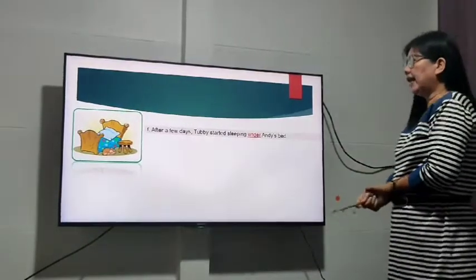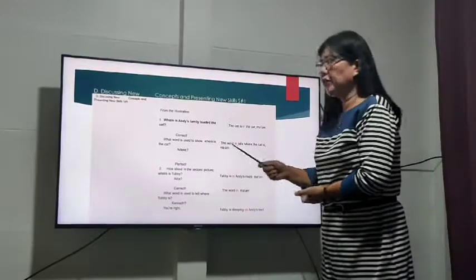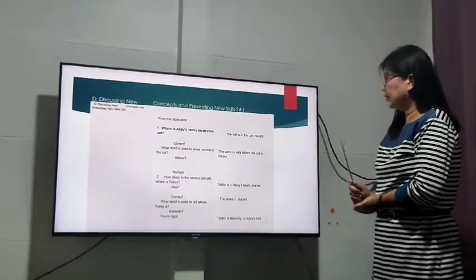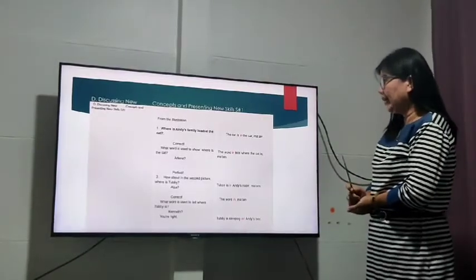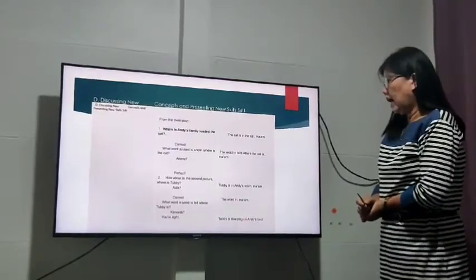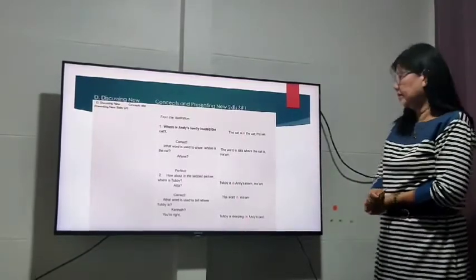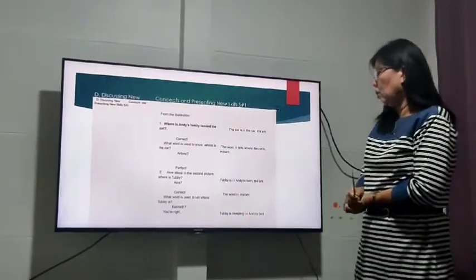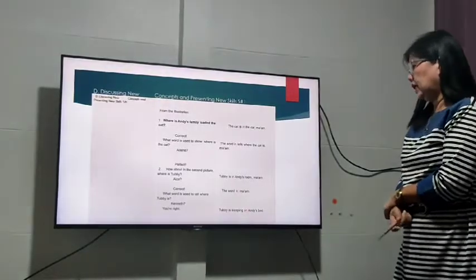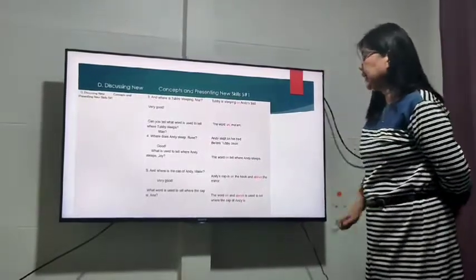From the illustration, where is Andy's family loaded the cat? The cat is in the car. Okay correct. What word is used to show where is the cat? The word in tells where the cat is. Okay perfect. How about in the second picture, where is Tubby? Tubby is in Andy's room. What word is used to tell where is Tubby? The word in. Okay, you're right. Next, where does Andy sleep?